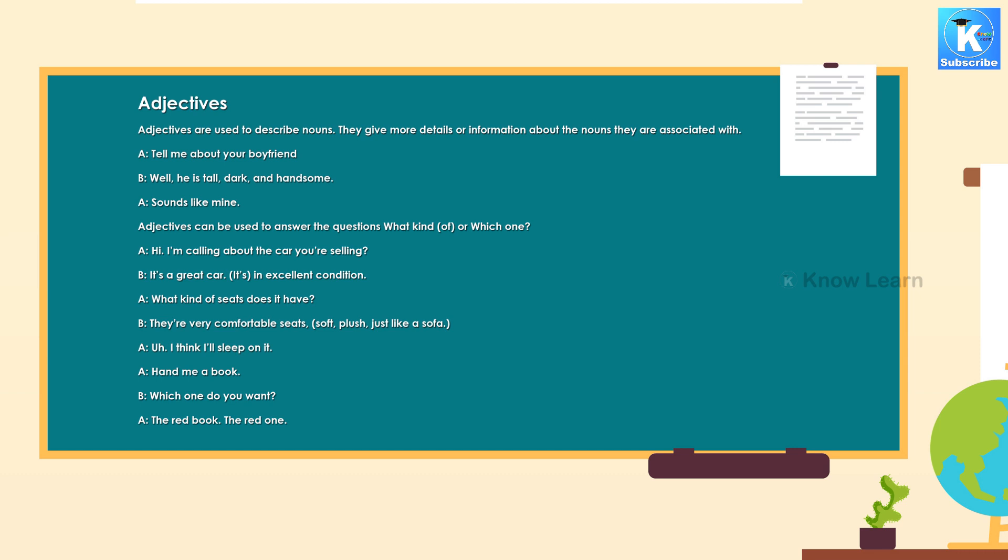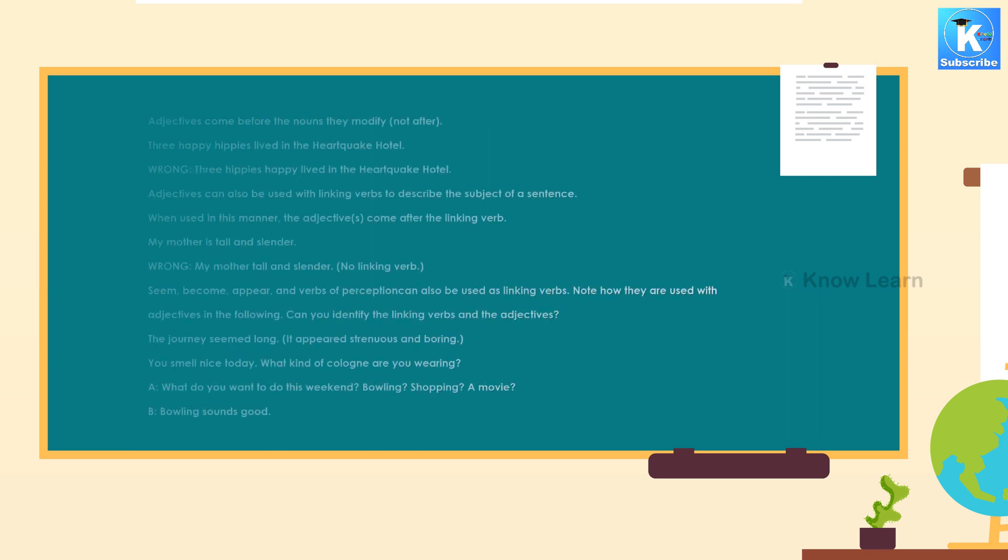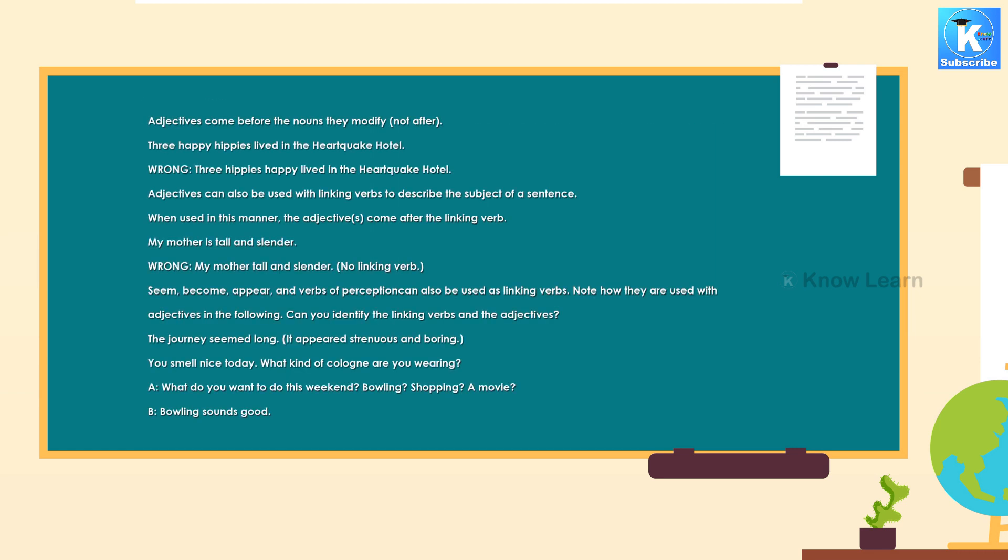A: Hand me a book. B: Which one do you want? A: The red book. The red one. Adjectives come before the nouns they modify, not after. Three happy hippies lived in the heartquake hotel. Wrong: Three hippies happy lived in the heartquake hotel.